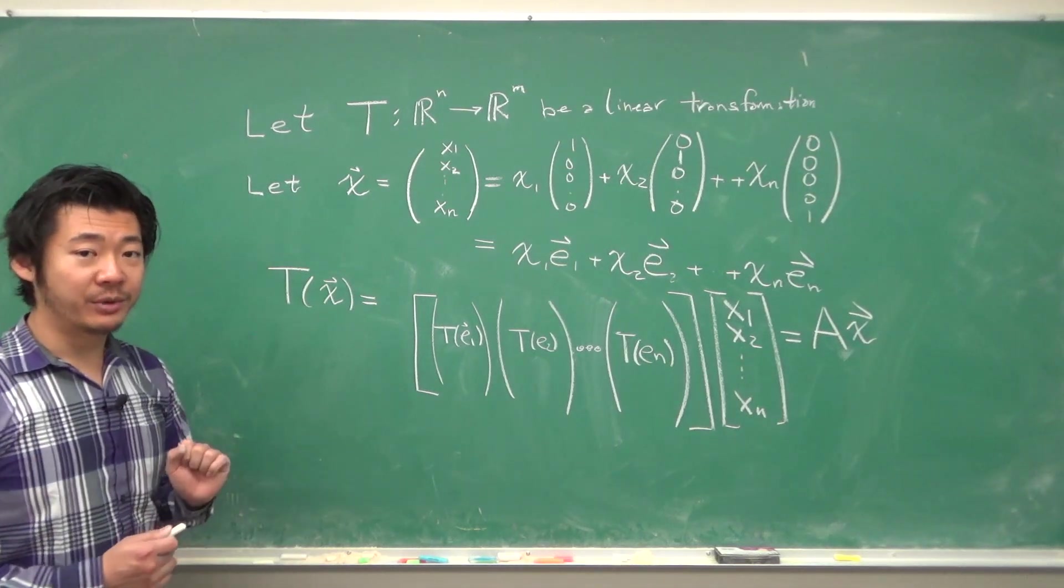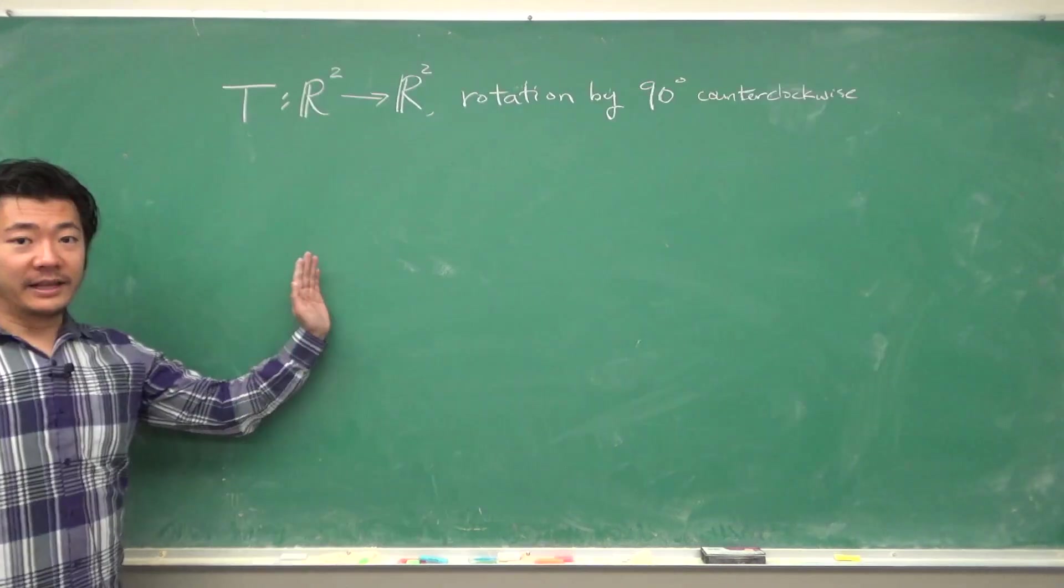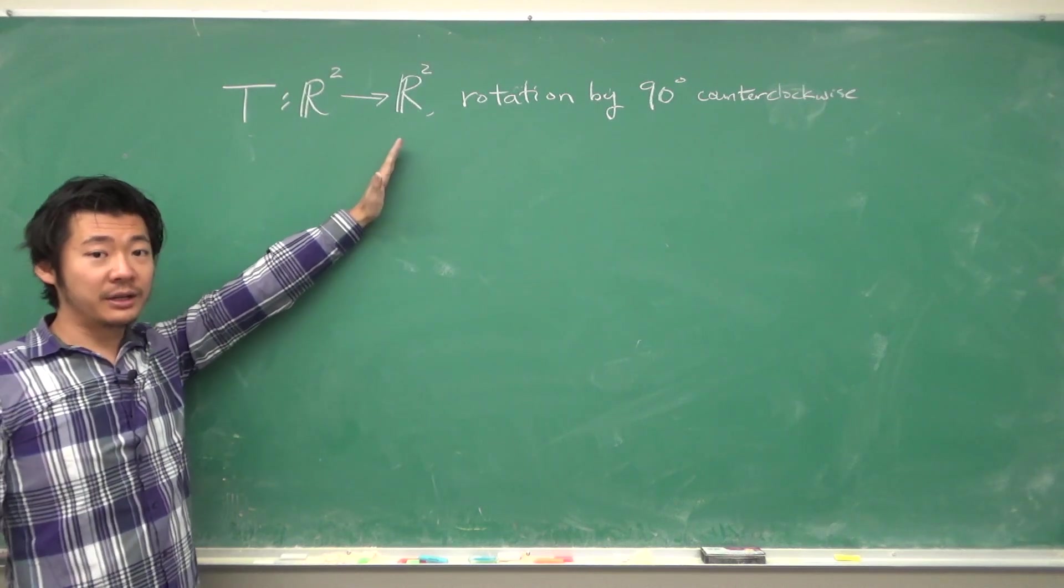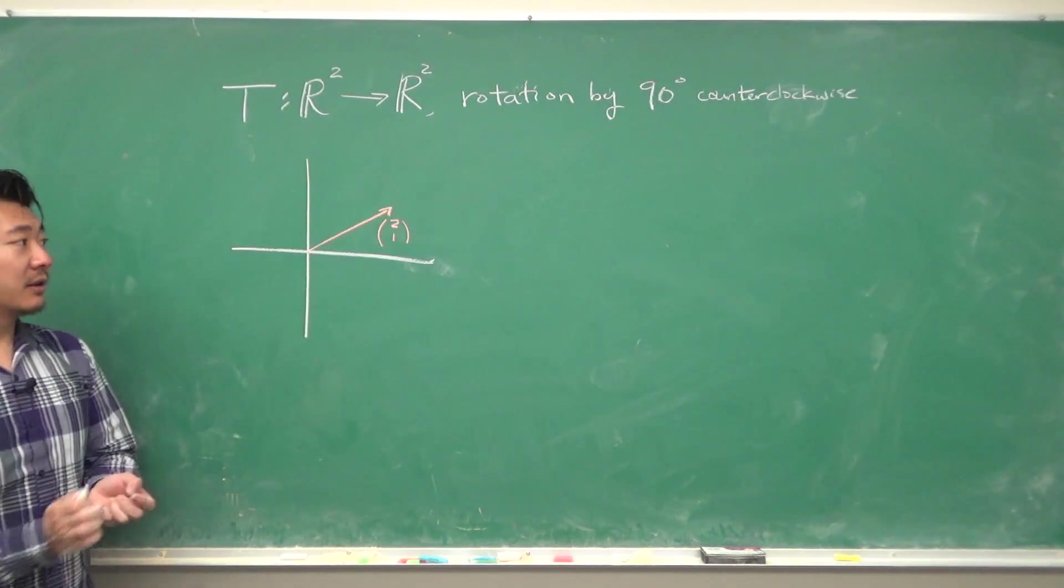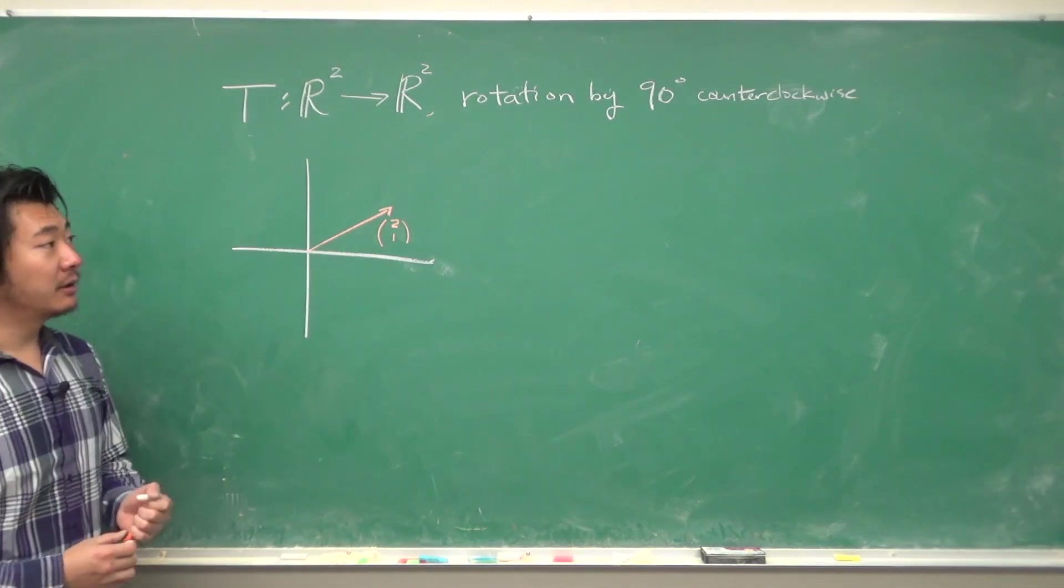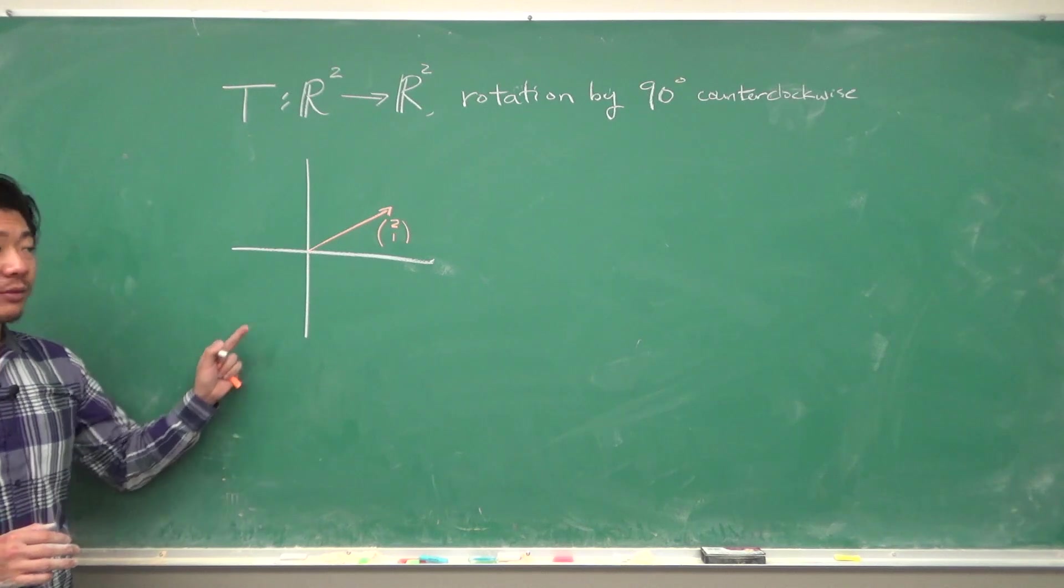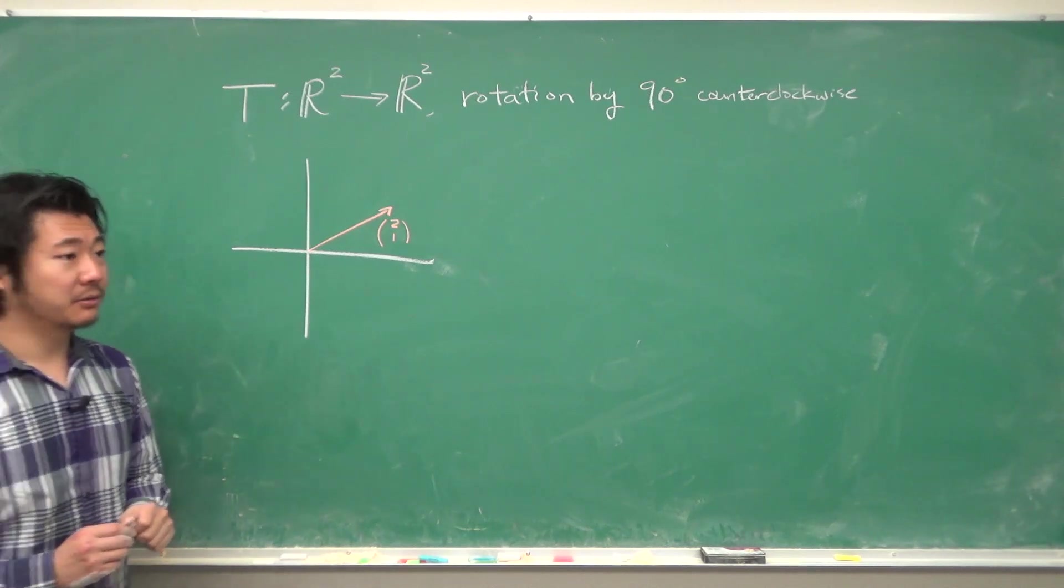So let's see an example and see why this is useful. Let's go back to our favorite example of rotation by 90 degrees counterclockwise. Suppose we have a vector (2, 1), then what would the vector be once it's rotated 90 degrees?